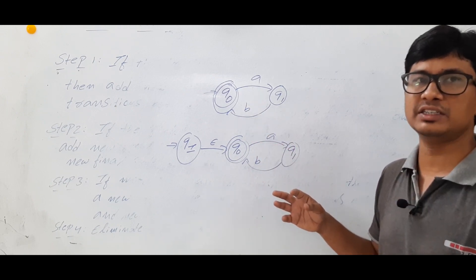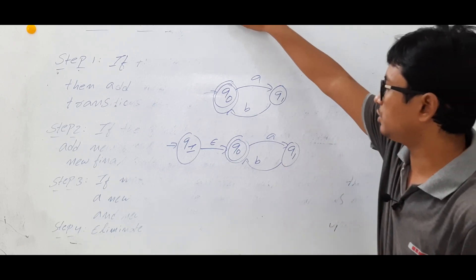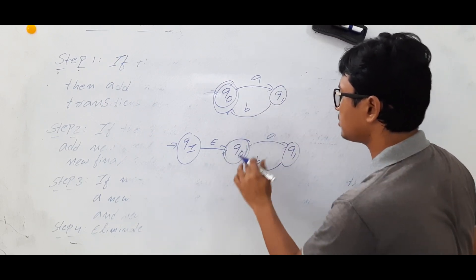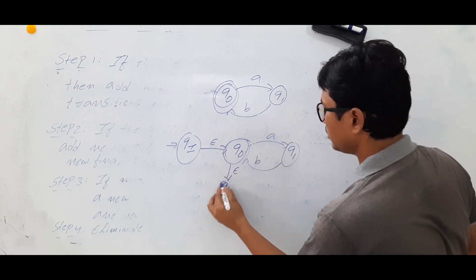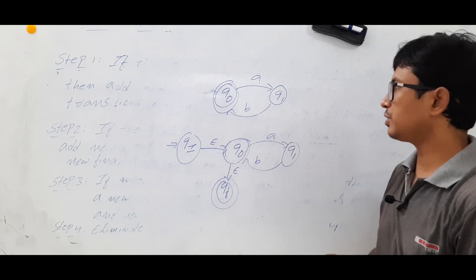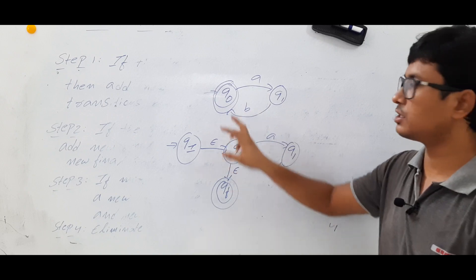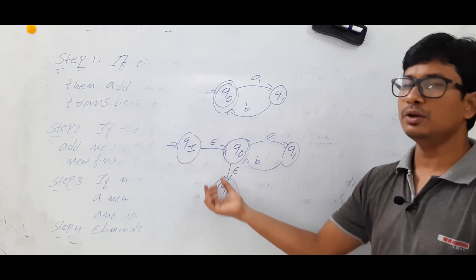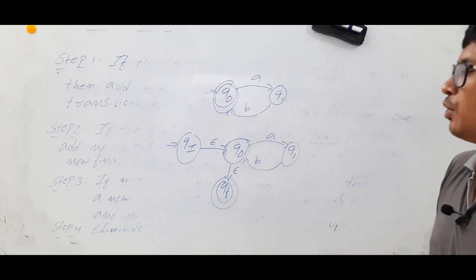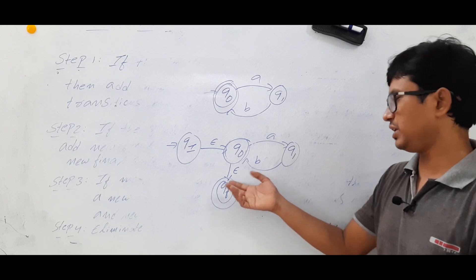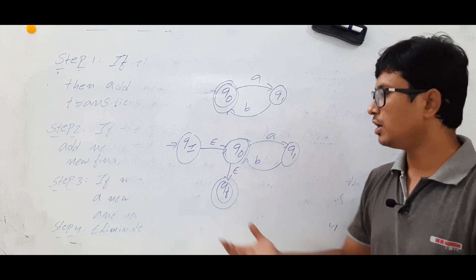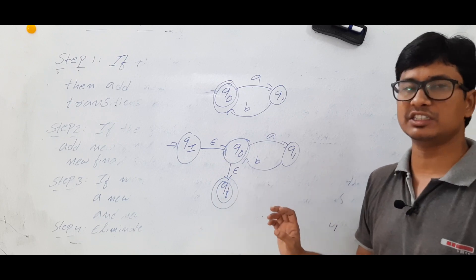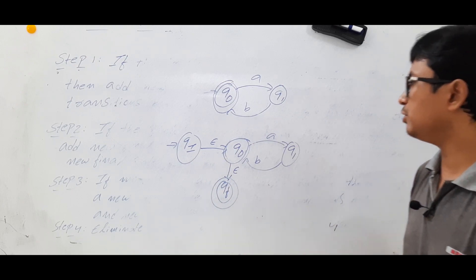I will add a new final state qf, with q0 having an epsilon transition to qf. Now q0 will not act as the final state. So I have addressed both scenarios: the initial state had an incoming edge and the final state had an outgoing edge, requiring new initial and final states with epsilon moves. Step three does not apply since we have only one final state. We move to step four: eliminate the intermediate states to get the regular expression.